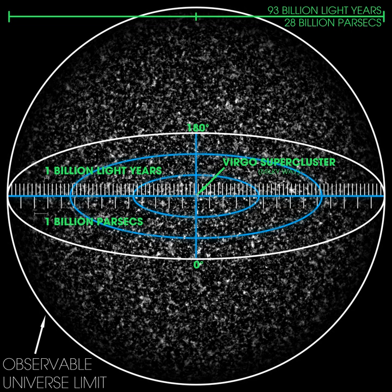Unlike proper distance, which is used to define recession velocity due to the expansion of space, which is less than the co-moving radius of the observable universe, this fact can be used to define a type of cosmic event horizon whose distance from the Earth changes over time. For example, the current distance to this horizon is about 16 billion light-years, meaning that a signal from an event happening at present can eventually reach the Earth in the future if the event is less than 16 billion light-years away, but the signal will never reach the Earth if the event is more than 16 billion light-years away.